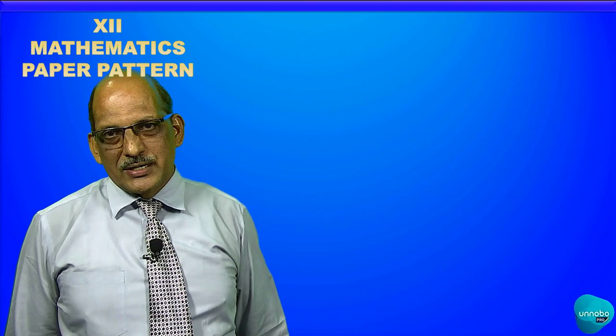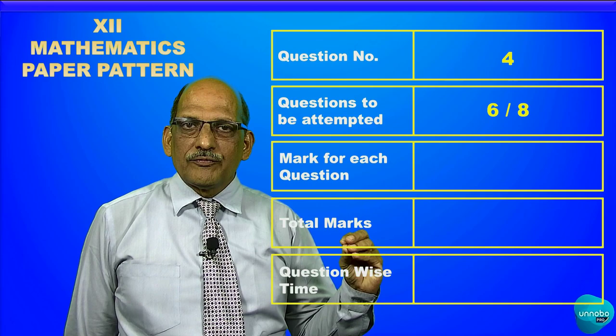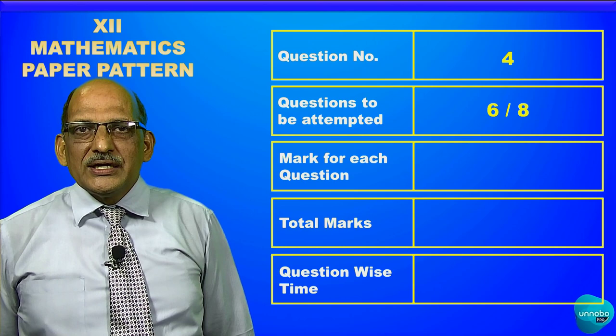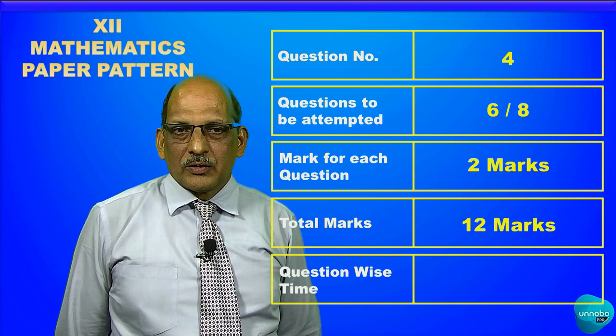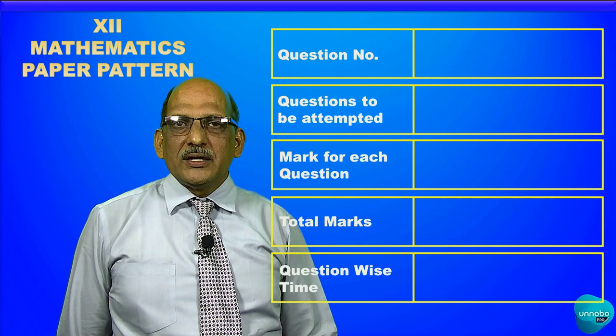In Section 2, question number four will be the first question. Students have to solve six out of eight questions, exactly like question number one. Each question carries two marks, so total marks for question number four will be 12 marks. The time to complete question number four is 24 minutes.